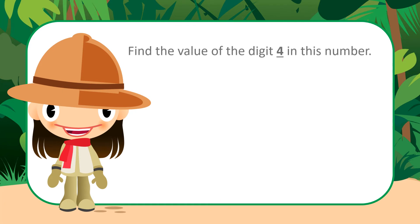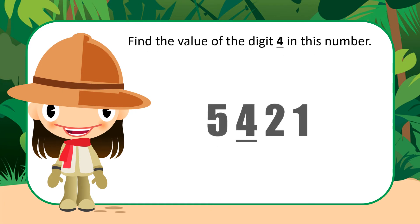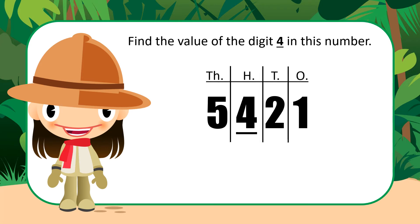Find the value of the digit 4 in this number: 5,421. First, we put up our columns. Now we look to see what place the underlined digit is in. The 4 is in the hundreds place. So that means that there are 4 hundreds.